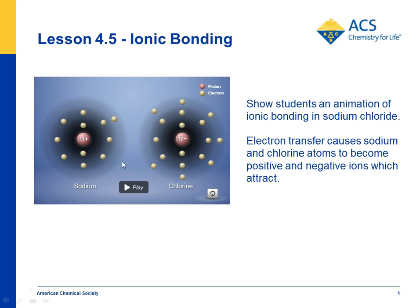Students see a sodium atom and a chlorine atom. The sodium atom has 11 protons and 11 electrons. The chlorine atom has 17 protons and 17 electrons. They're arranged according to energy levels 2, 8, and 1 for sodium, and 2, 8, and 7 for chlorine.